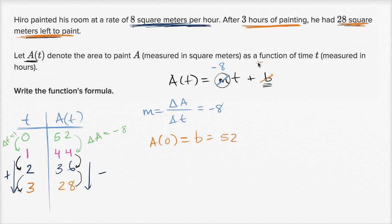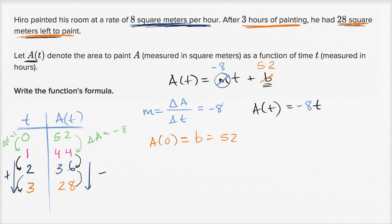So b is equal to 52. Therefore a of t, the area he has left to paint as a function of time, is equal to negative eight times t plus 52.